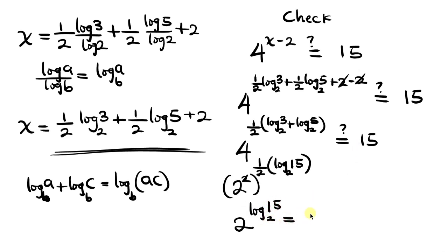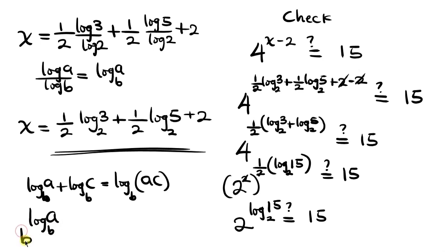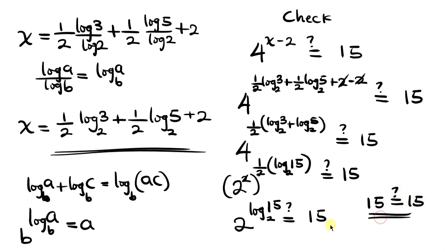There is an interesting property of logarithm: when the base of the exponent equals the base of the logarithm, b^(log_b a) = a. Since the base here is 2 in both cases, 2^(log₂15) = 15, so the left-hand side equals 15, which equals the right-hand side, thereby proving our answer.